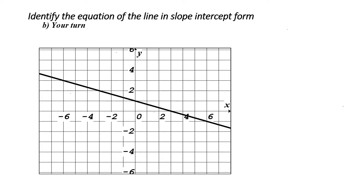All right. Just like before, I want to know the equation of the line in slope-intercept form. Slope-intercept form is y equals mx plus b. First, I'm going to find my y-intercept, which is the point where my line crosses the y-axis. I go along my line until I hit the y-axis. There is where it hits the y-axis. That point is plus one. So I write out my equation: y is equal to something multiplied by x plus one.